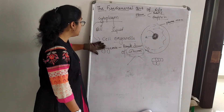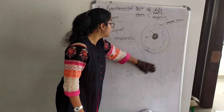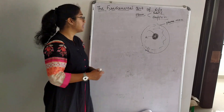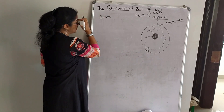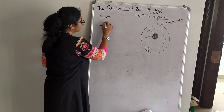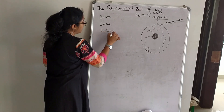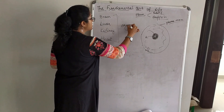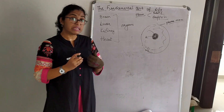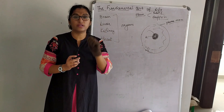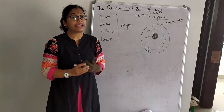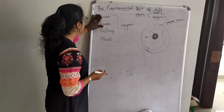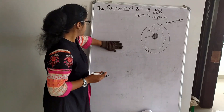Cytoplasm also contains cell organelles. Just as our body performs many functions through different organs — brain, liver, kidney, heart — cell organelles are the organs of the cell. They perform specific functions required to keep the cell alive.